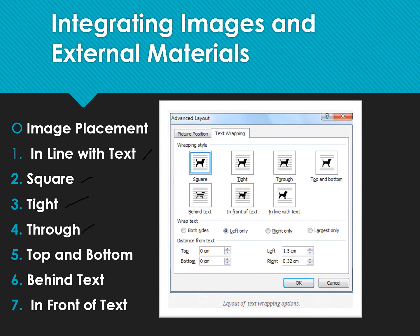'Through' allows the text in your document to flow even tighter, taking the contour and shape of the image. 'Top and Bottom' pushes the text away vertically to the top or bottom of the image so that the image occupies a whole text line on its own. 'Behind Text' allows the image to be dragged and placed anywhere on your document with all the text floating in front of it. 'In Front of Text' places your image right on top of your text as if it was dropped onto it. These different image placements will be shown in the demonstration.